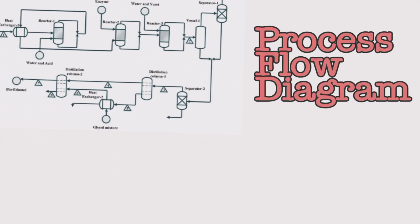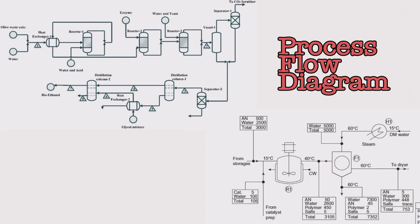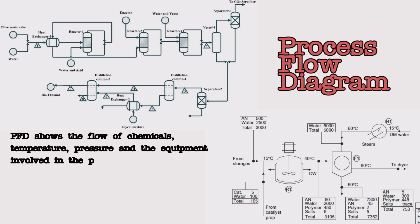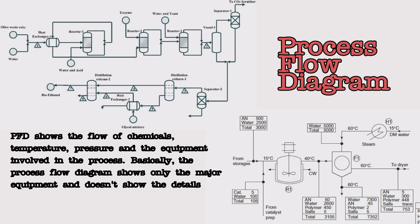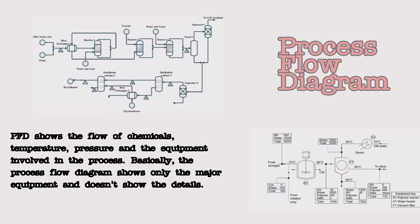Process flow diagram, PFD. Process flow diagram shows the flow of chemicals, temperature, pressure and the equipment involved in the process. Basically, the process flow diagram shows only the major equipment and doesn't show the details. It is used for visitor information and new employee training.